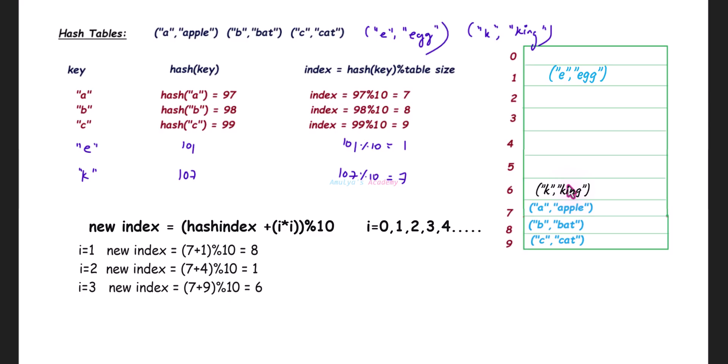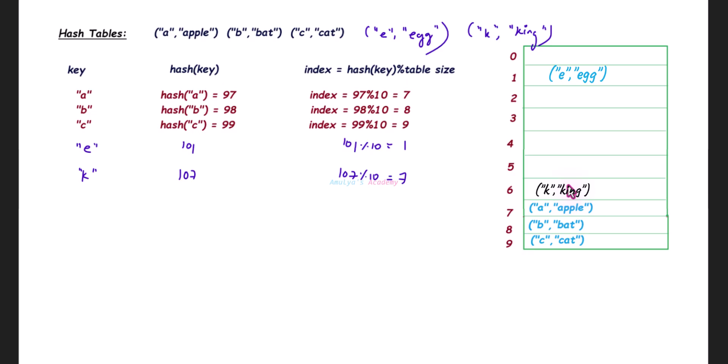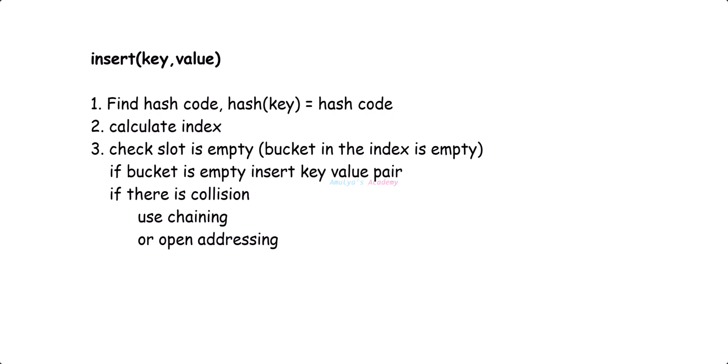We already discussed how collision occurs and how to solve that situation. You can insert a new key-value pair to a hash table like this: First find the hash code and calculate the index using the key. Then check whether that slot is empty or not. If the slot is empty, insert the key-value pair. If it's not empty, there is a collision, so use collision resolution technique and insert the key-value pair to the hash table.